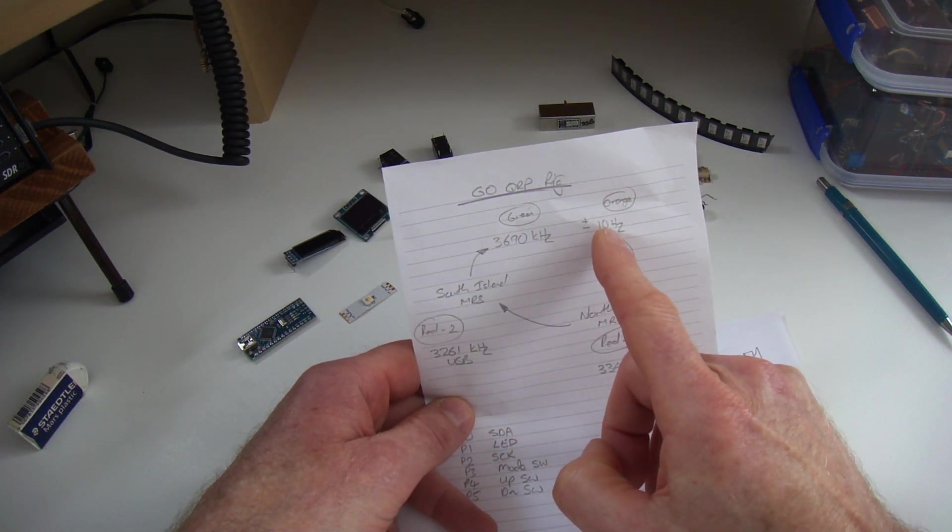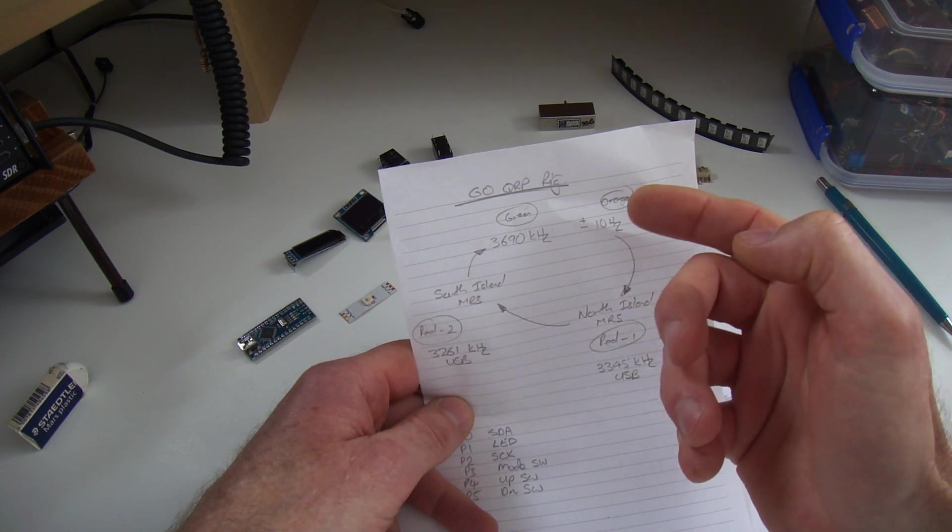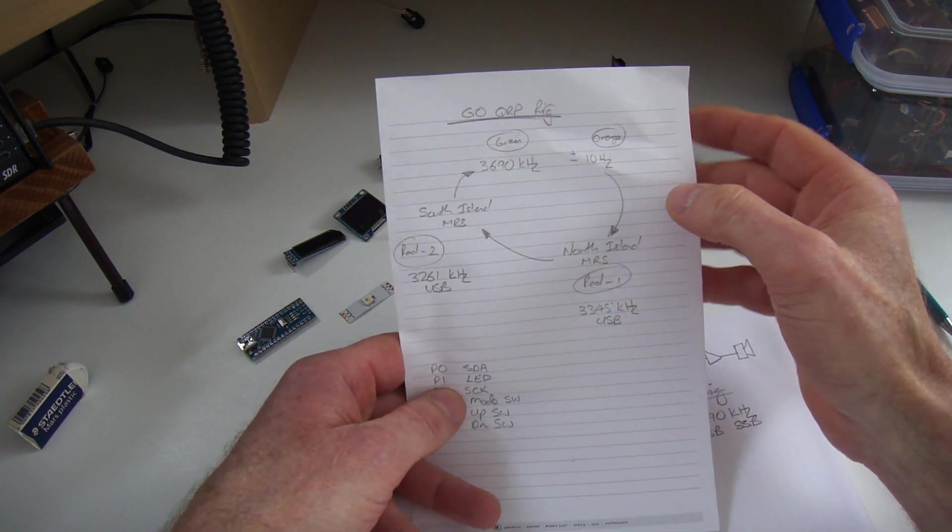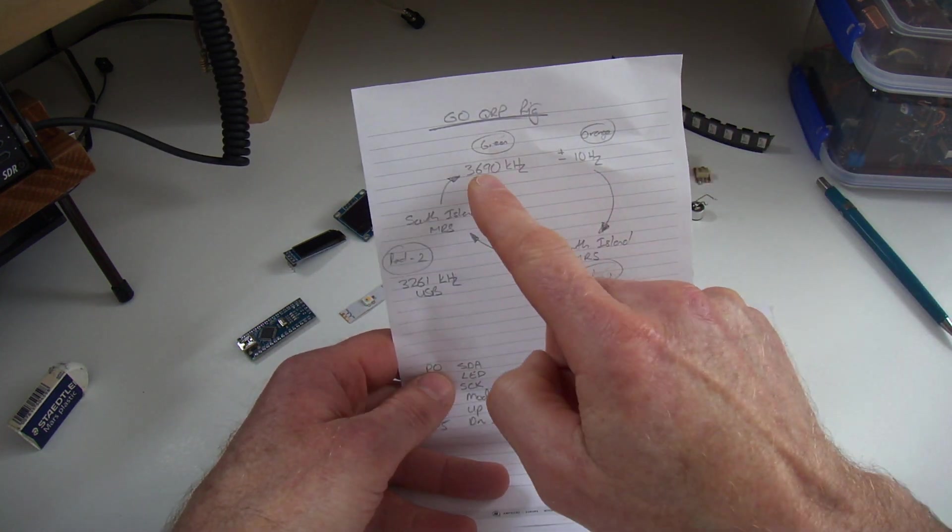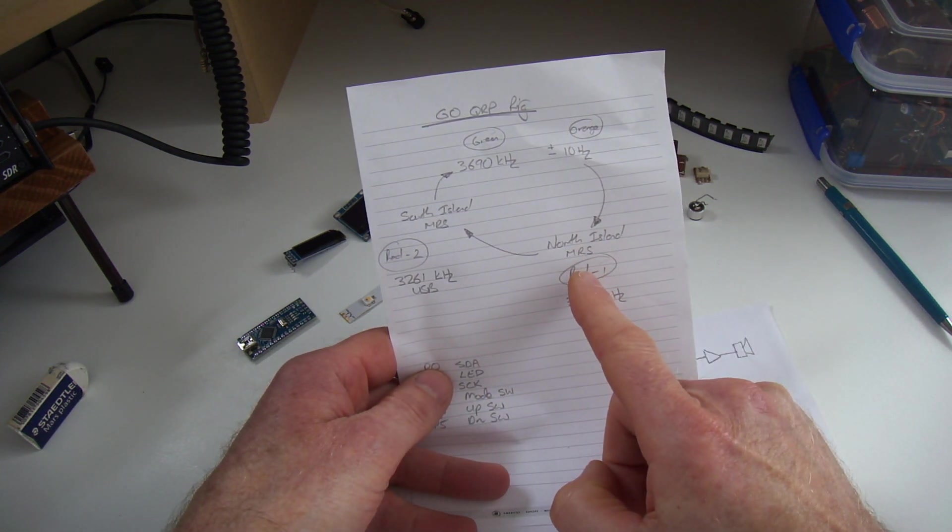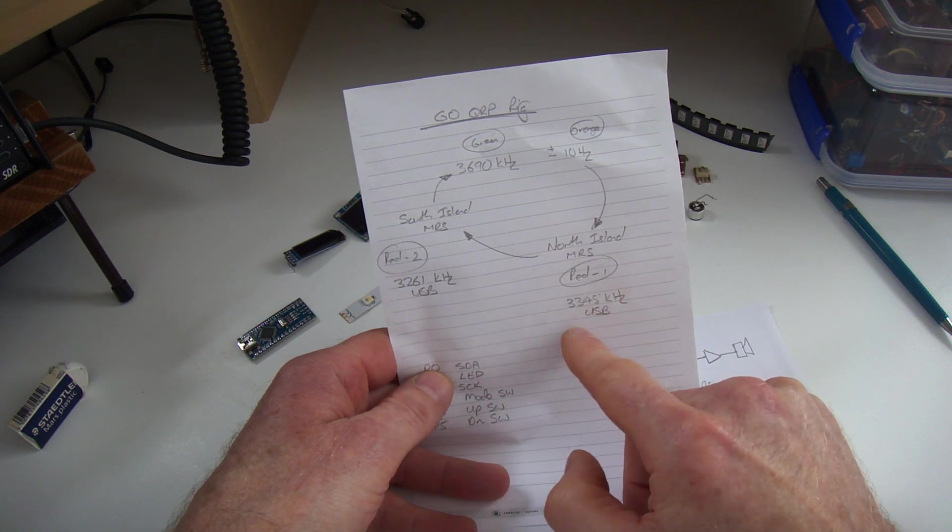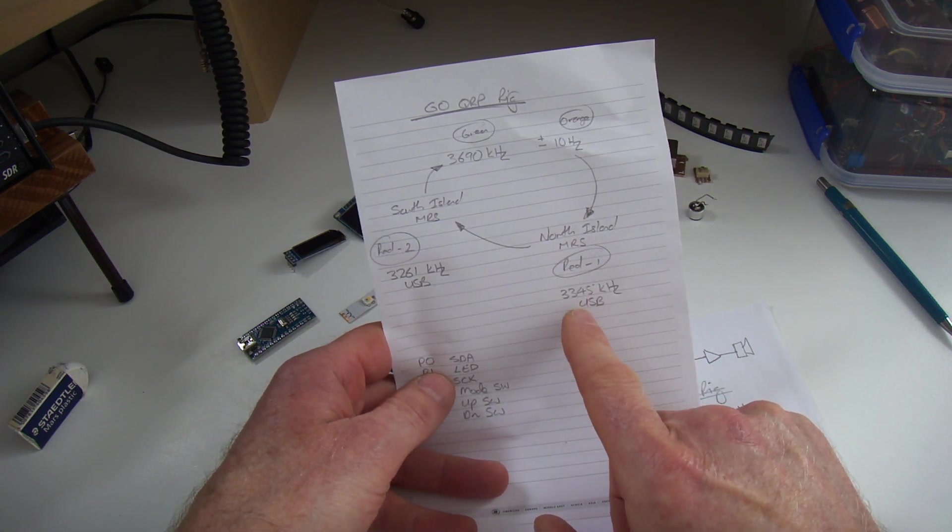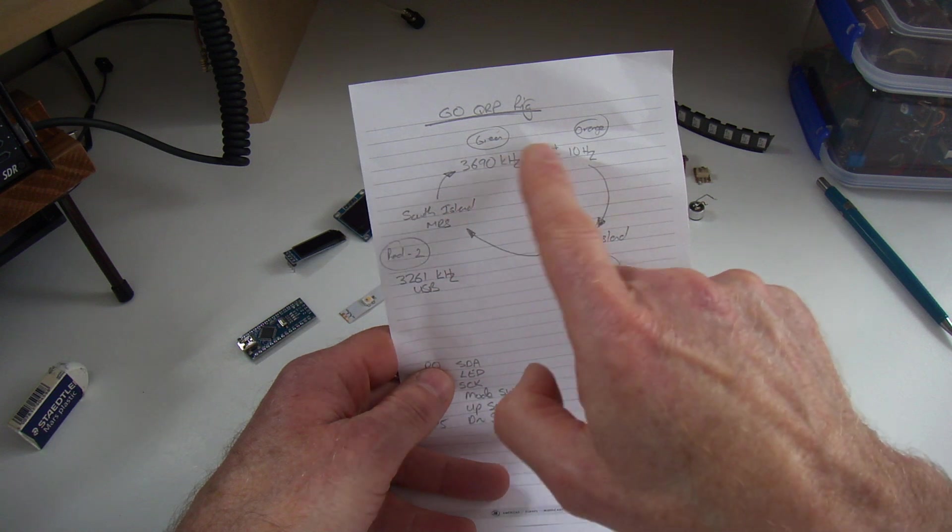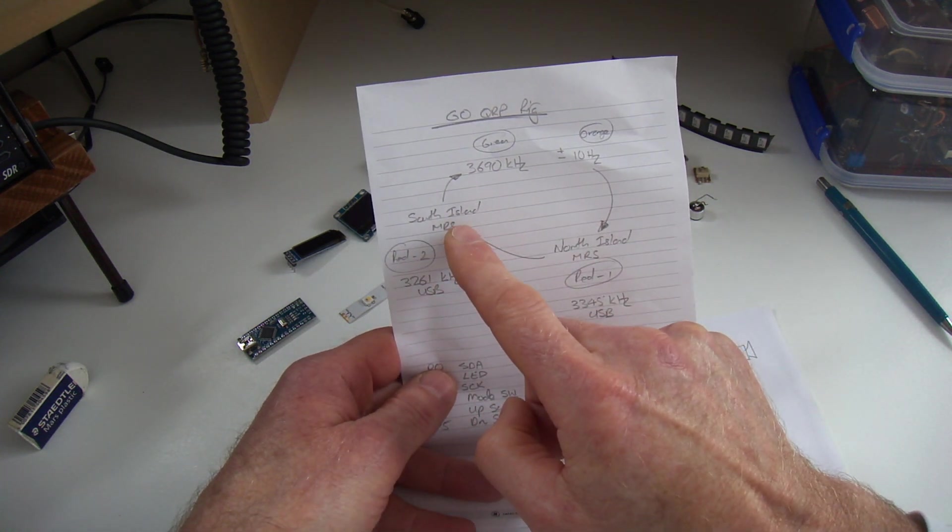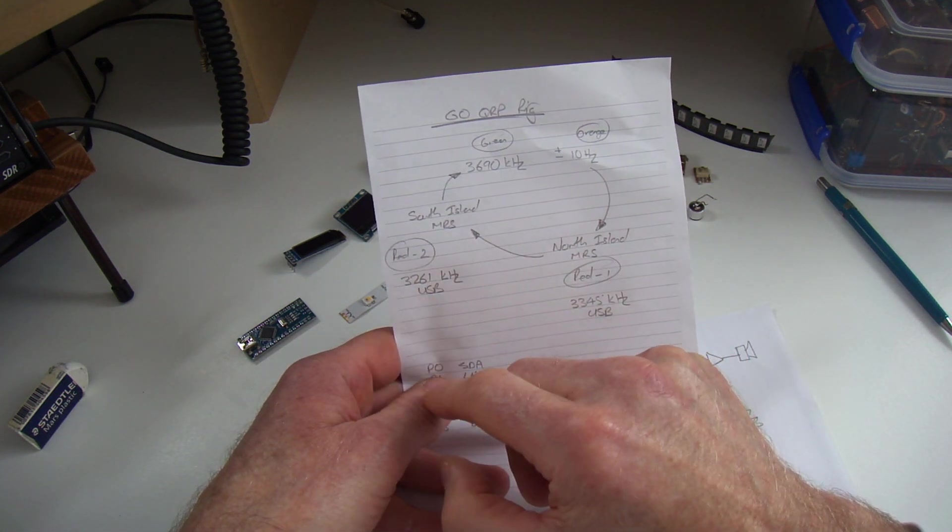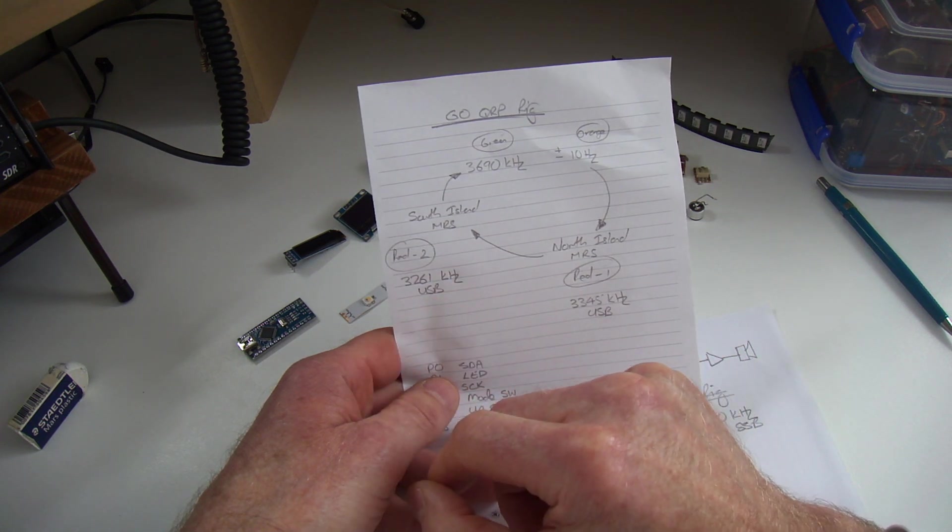And then I also want the ability through a mode switch to either switch to the North Island mountain radio service frequency of 3345 kHz upper sideband, or through another mode switch transition to the South Island MRS of 3261 kHz, also upper sideband.